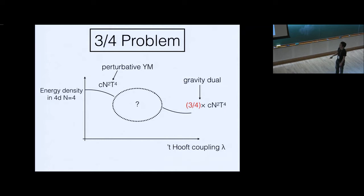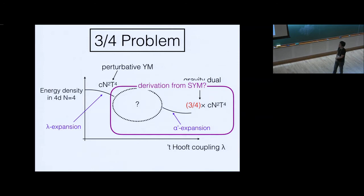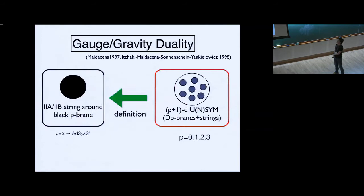But we don't really know if they are actually connected. From the gauge theory point of view, we only did an honest gauge theory calculation at weak coupling. There is no proof that the dual gravity prescription is correct, and even if it's true, we don't know if they are actually connected. So we want to derive this from super-Yang-Mills theory. This is the three-quarter problem.